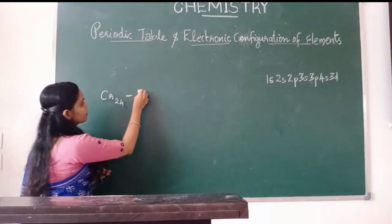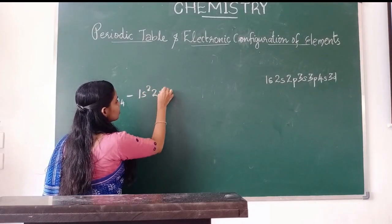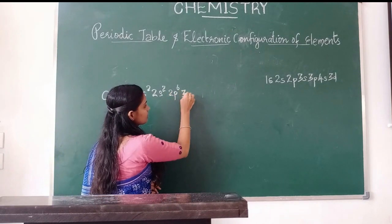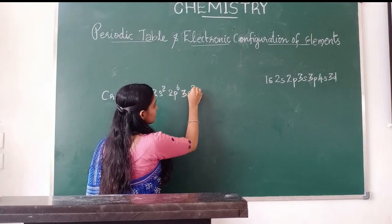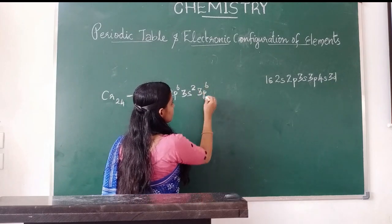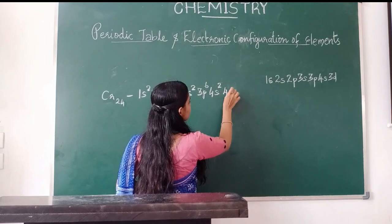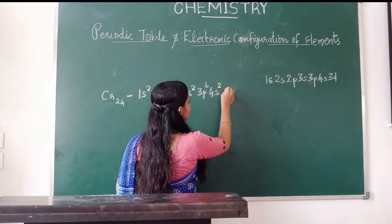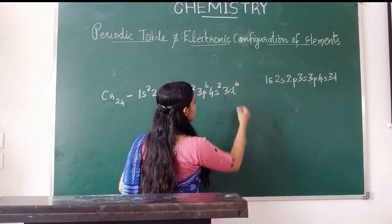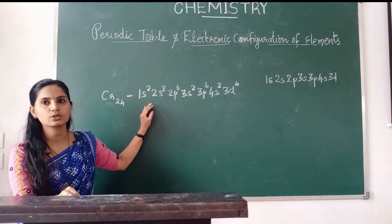The expected electronic configuration of chromium is: 1s2, 2s2, 2p6, 3s2, 3p6, 4s2, 3d4. This is the expected configuration.